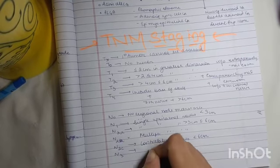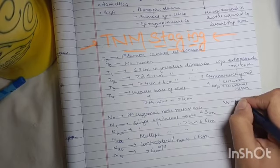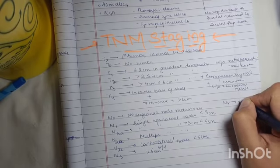If it is N3, it means that it is greater than 6 centimeters, and if it is NX, it means that they cannot be assessed.